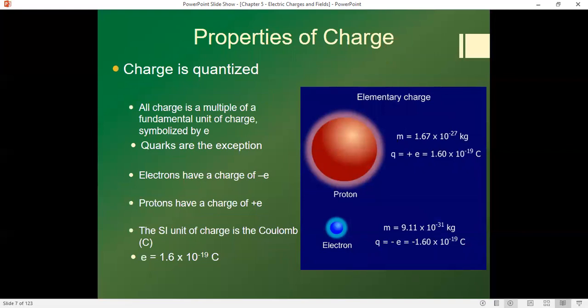Charge is not only conserved, charge is quantized. And this is very simple to think about. All electrons have the same charge. All protons have the same charge. The proton has a charge of what we say plus e, it's 1.6 times 10 to the minus 19 coulombs.